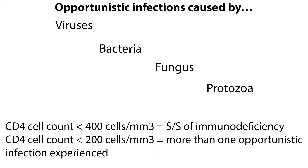Patients with HIV or AIDS have severely compromised immune systems, so these organisms thrive, multiply, and produce disease. As CD4 cell counts fall below 400 cells per cubic millimeter, signs and symptoms of immunodeficiency occur. And when CD4 counts fall below 200 per cubic millimeter, more than one opportunistic infection is experienced.